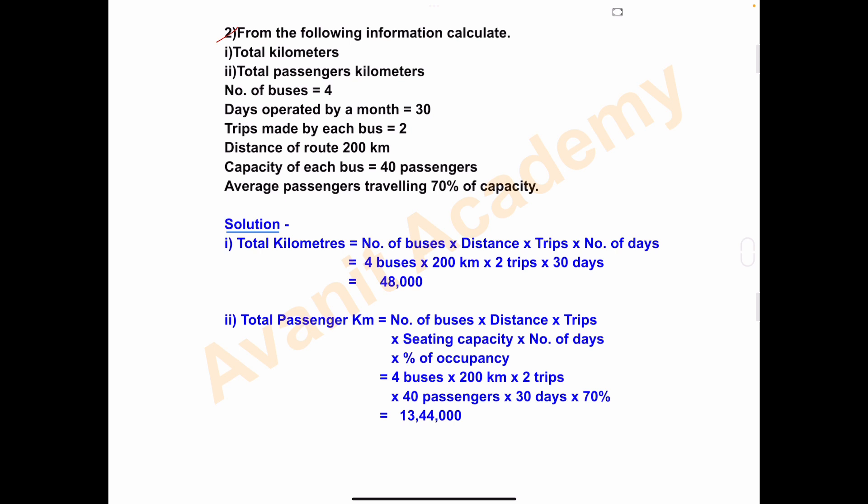From the following information, calculate number 1: total kilometers, and number 2: total passenger kilometers. First we have to calculate the total kilometers and second total passenger kilometers. We will see what information they have given.